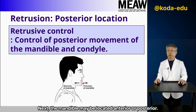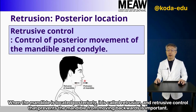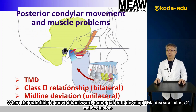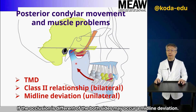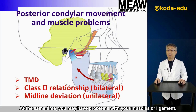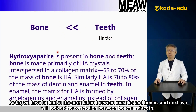Next, the mandible may be located anteriorly or posteriorly. When the mandible is located posteriorly, it is called retrusion, and retrusive control that prevents the mandible from moving backwards is important. When the mandible is moved backward, some patients develop TMJ disease and Class 2 malocclusion. If the occlusion differs on both sides, midline deviation may occur. At the same time, you may have problems with your muscles or ligaments. So far, we have looked at the correlation between muscles and bones, and next we will look at the correlation between bones and teeth.